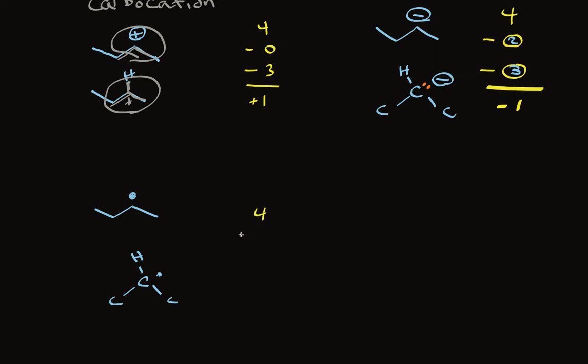And doing the formal charge calculation, 4, we subtract the number of unshared electrons, it's 1. We subtract the number of shared pairs, 1, 2, 3. And we have a radical that has no charge on it. It's not a stable neutral molecule, because it has a carbon with an unfilled outer shell. It only has 7 electrons.